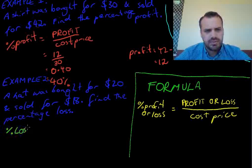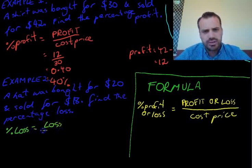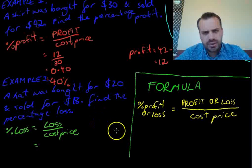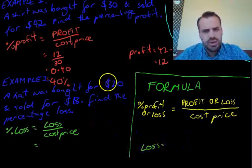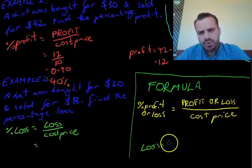So, the percentage loss is equal to the loss in dollars divided by the cost price. Now, the loss this time, I'll just do a little bit of working over here. The loss this time is equal to what we bought it for, $20, minus what we sold it for, $18.